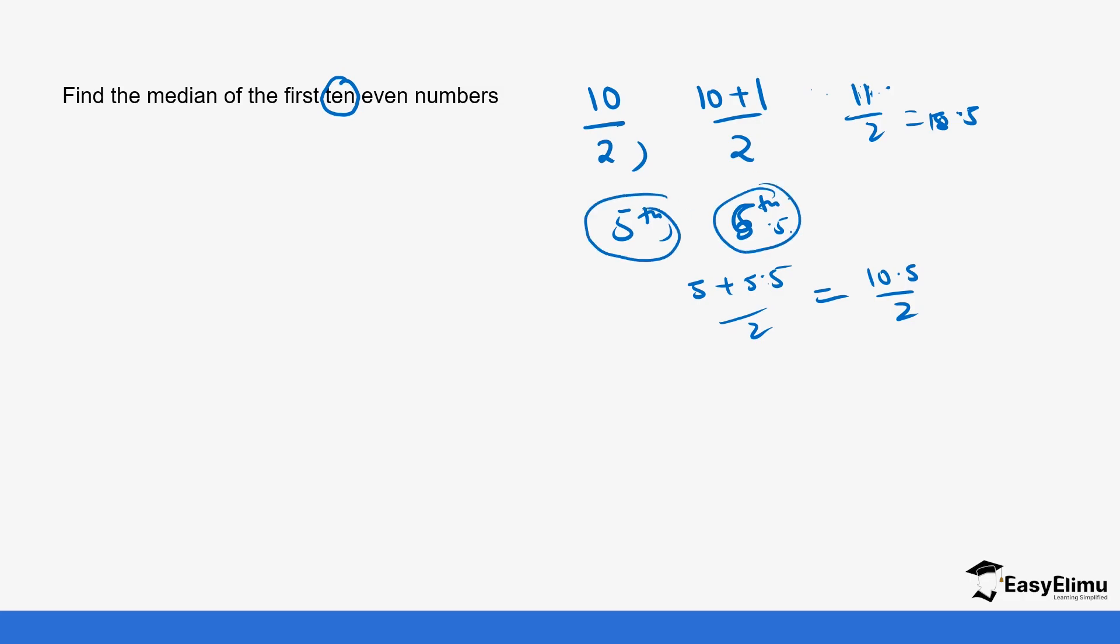Let's arrange our numbers first. We have 2, 4, 6, 8, 10, 12, 14, 16, 18, 20. So the fifth value is 10 and the sixth value is 12. This is what we want. We will take our values 10 and 12, that is (10+12)/2. 10 plus 12 is going to give us 22. When you divide 22 by 2 you get 11. So you see, it's the value in between 10 and 12. That's how we get our median.